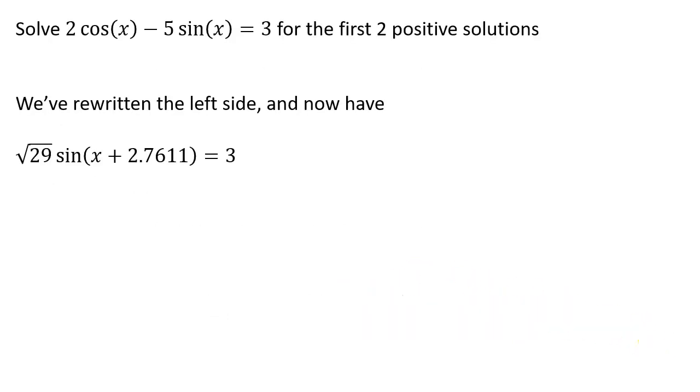All right. So then let's go back to our original problem. Our original problem said solve 2 cosine x minus 5 sine x equals 3 for the first two positive solutions. And we just found that we can rewrite the left-hand side as root 29 sine x plus 2.7611. And so now we have that equals 3.